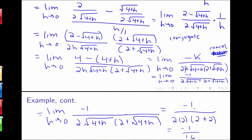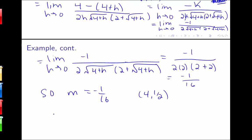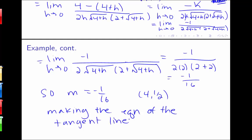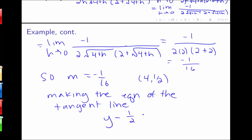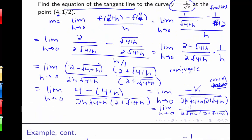With slope m equals negative 1 over 16 and point (4, 1/2), the equation of the tangent line uses point-slope form: y minus y1 equals m times x minus x1. This problem brought together ideas from section 2.1 — now instead of just using tables to get closer and closer, we can do the actual limit computation using all the algebraic techniques we've learned.